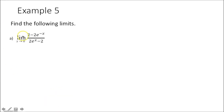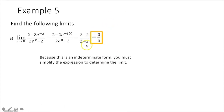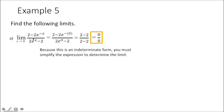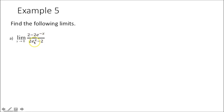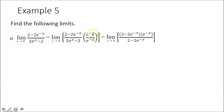Example 5: the limit as x approaches 0 of this function — always try substitution first. Plugging in 0 gives 2 minus 2 over 2 minus 2, which is 0 over 0, an indeterminate form. To simplify, multiply by a form of 1: e to the negative x over e to the negative x. In the numerator, leave it as 2 minus 2e to the negative x times e to the negative x. In the denominator, distribute — e to the negative x times e to the x cancel, and negative 2 times e to the negative x gives negative 2e to the negative x. The matching terms cancel, leaving the limit as x approaches 0 of e to the negative x. Plugging in 0 gives e to the 0, which is 1.